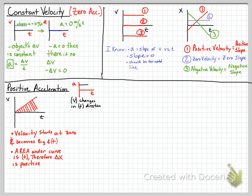The area under this line is in the shape of a triangle in the positive quadrant. If we take the area of that triangle — one half base times height — we get a positive number, which means our displacement, our change in position, was in a positive direction. Our velocity was also positive, so we were changing our velocity in the positive direction. So our displacement there is positive.